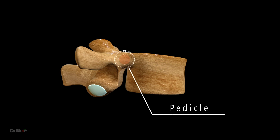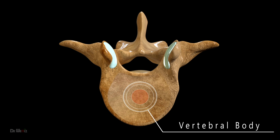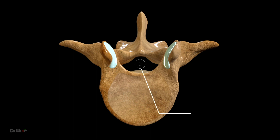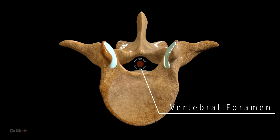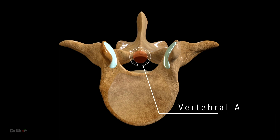The pedicle is a short, thick, bony structure that connects the vertebral arch to the vertebral body, providing stability and support. The vertebral body is the largest part of the lumbar vertebra, providing support and stability to the vertebral column. The vertebral foramen, located in the center of the vertebra, contains the spinal cord and various nerves. The vertebral arch is formed by two pedicles and two laminae, which together enclose the vertebral foramen and provide protection to the spinal cord.